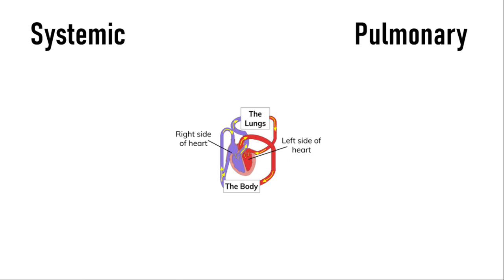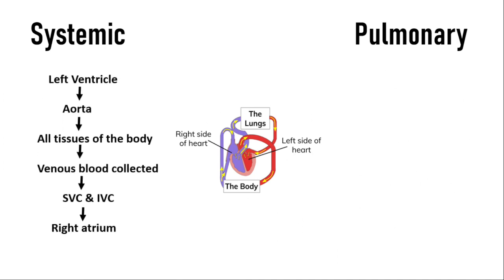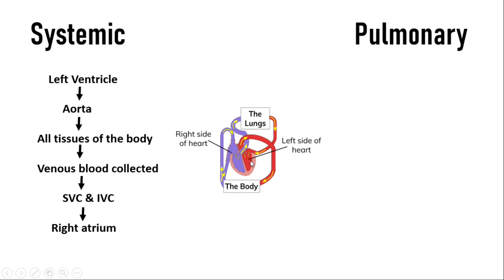What is the systemic circulation and what is the pulmonary circulation? In the systemic circulation, the blood from the left ventricle goes into the ascending aorta, and through the ascending aorta or its branches, or through the descending aorta, this blood will reach the various parts of the body or all the tissues. After that, this venous blood will be collected and through the superior and inferior vena cava, it will come back to the right atrium. This is now the deoxygenated blood.